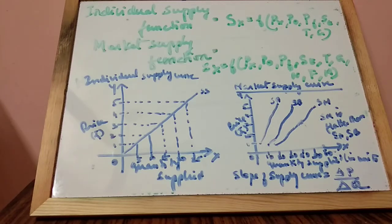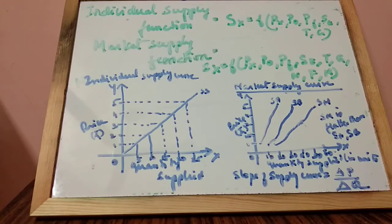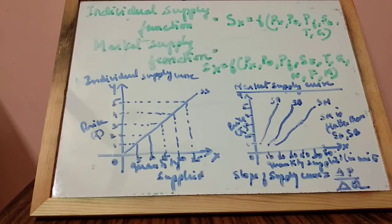When you take a market supply schedule, you will see the supply schedule of 2 or 3 firms in the market. The details of each individual firm's supply are given, and then you add them up to get the market supply.